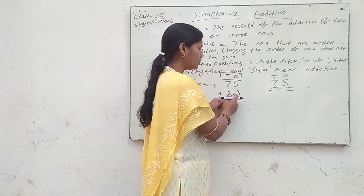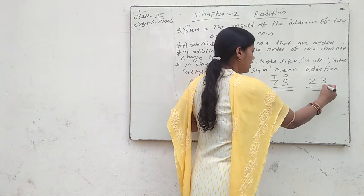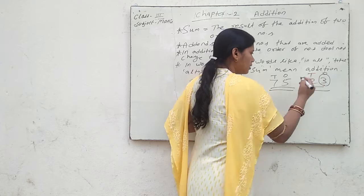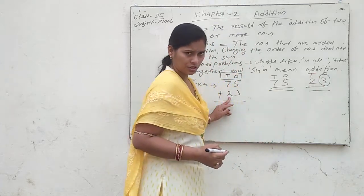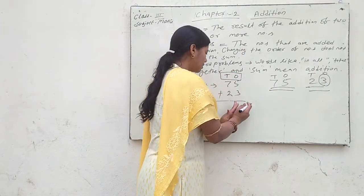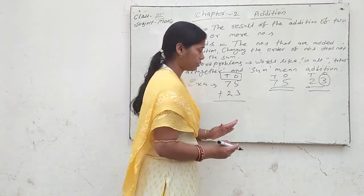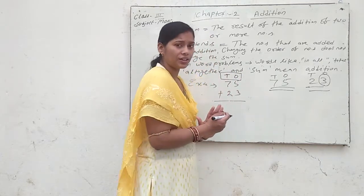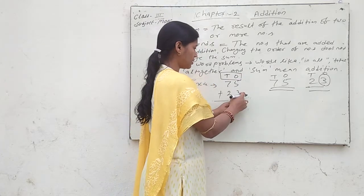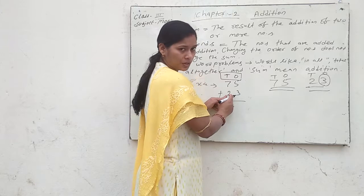The second number is 23. Write it according to its place value. 3 is in the ones place and 2 is in the tens place. So write the digits according to their place values — 3 in the ones place and 2 in the tens place.